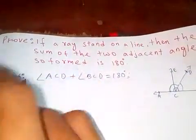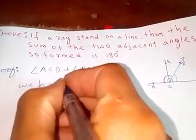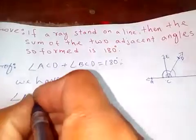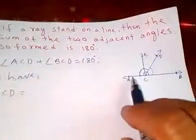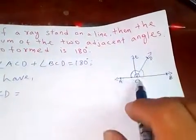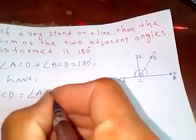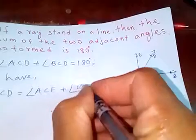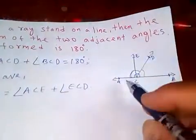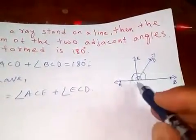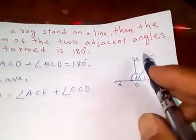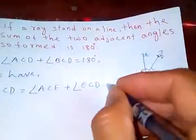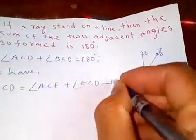Now let's prove that. We have angle ACD. If you look, ACD is angle ACE plus angle ECD. Am I right? ACD is same as ACE plus ECD. Okay, let's say this is equation 1.